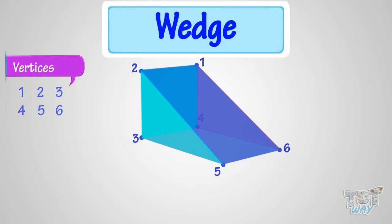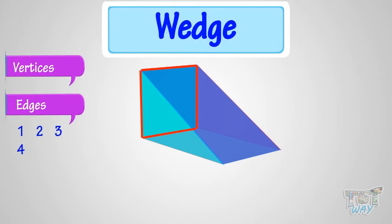Now let's count its edges. One, two, three, four, five, six, seven, eight, nine. So, a wedge has nine edges.